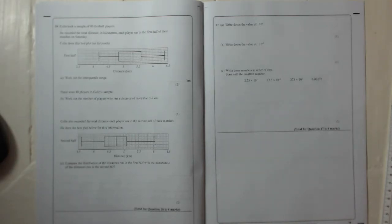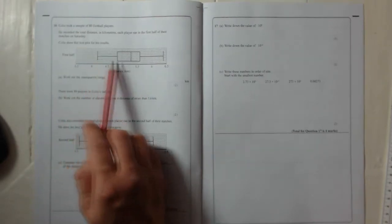Question 16: Colin took a sample of 80 football players. He recorded the total distance in kilometres each player ran in the first half of their matches on Saturday. Colin drew this box plot.